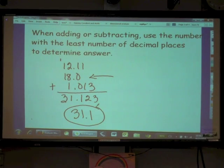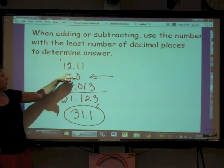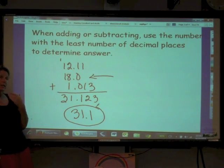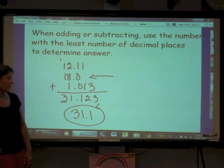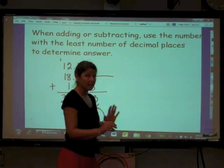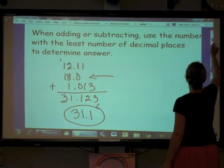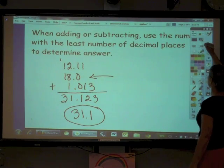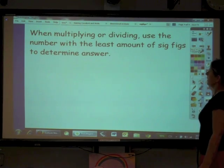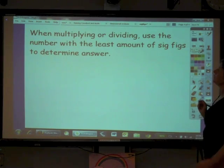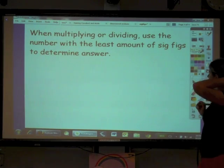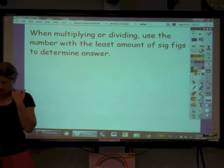And that is our answer. Okay, so addition, subtraction. You are going to use your number that has the least number of decimal places. It's a little different for multiplying and dividing, which is what we're going to do most of the time. When multiplying or dividing, use the number with the least amount of sig figs to determine the answer.